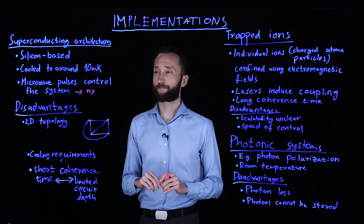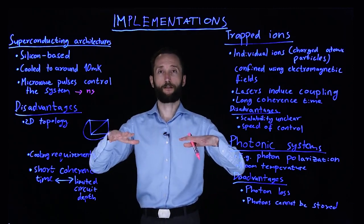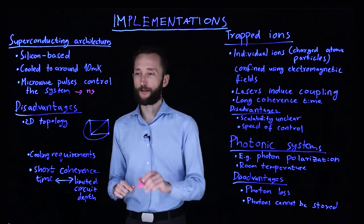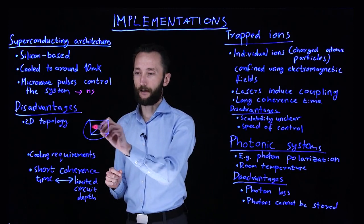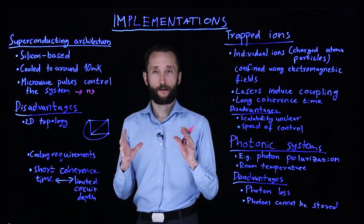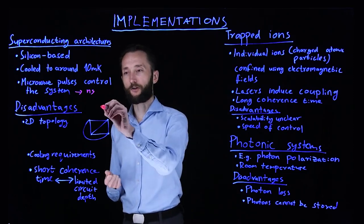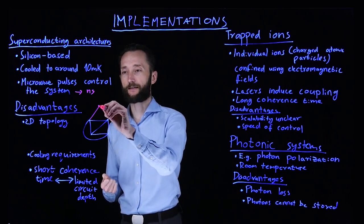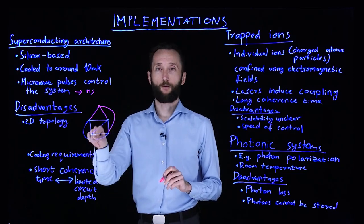But there are a couple of problems. First of all, since you have this silicon wafer, this is fundamentally two-dimensional. So imagine now that you have four qubits implemented — you can have full connectivity between every pair of qubits, and you can apply gates between any pair of qubits. But the moment you add a fifth one, that goes away, because there's no way to connect this fifth one with all of the others.